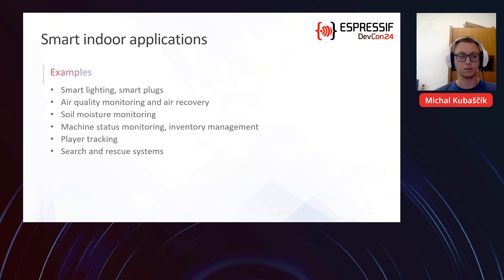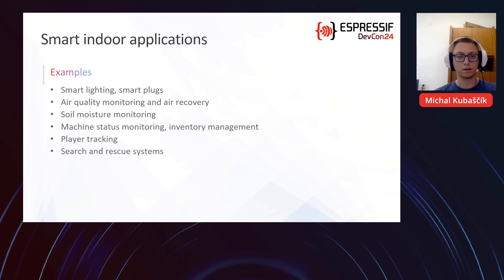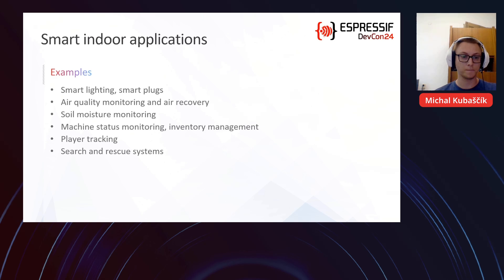Some examples of smart indoor applications include smart lighting, smart plugs, air quality monitoring with air recovery, soil moisture monitoring with water control, machine status monitoring, inventory management, player tracking — for example tracking players in a laser game or escape room — or some search and rescue systems.